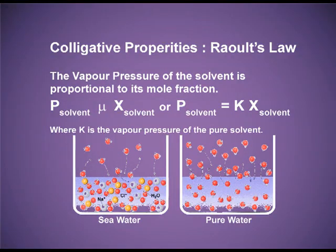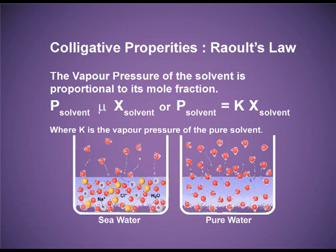Just see this picture. In picture A, you can see that it is sea water, and sea water has many salts. You can see the red balls — these are water molecules — and yellow and white balls — these are some salts. Due to these salts, the water molecules are in lesser number on the surface and they are getting little chance to escape. So in the vapour state, the number of water molecules are less.